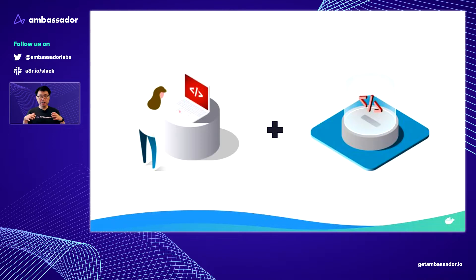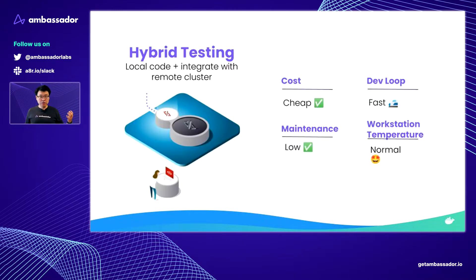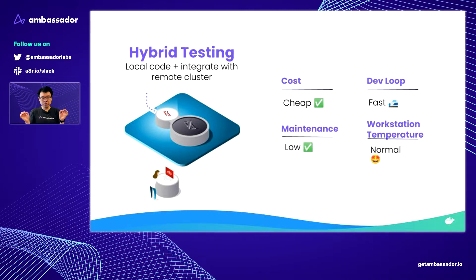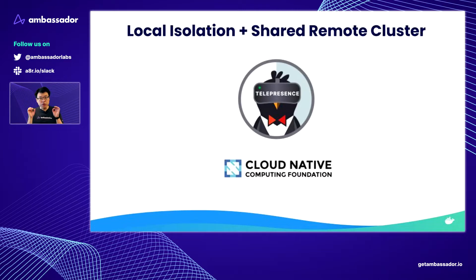What if we could combine the best of both worlds? What if we could take a local laptop or workstation and let it virtually participate and connect to the remote cluster? This would give you the benefits of both local and remote. It's affordable because you're using your laptop for most development, you get a fast development loop, and if you can share that remote cluster with everyone else, it's not that expensive. Maintenance is low because CI systems maintain your remote cluster, and your workstation temperature is totally normal. This is what Telepresence does.